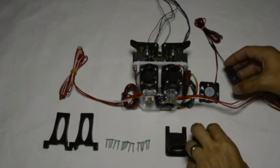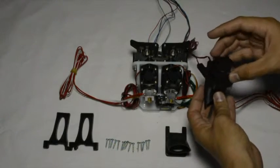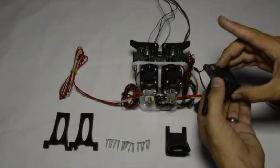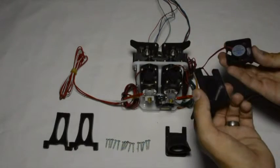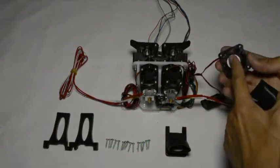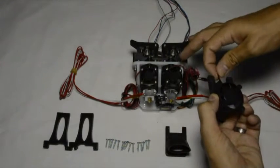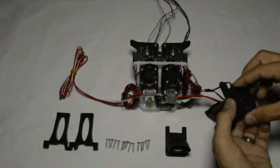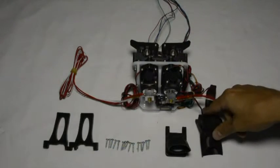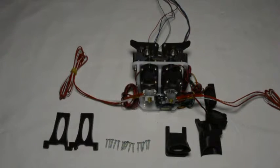So firstly we will screw the fans onto the fan ducts. And we will assemble it so that the sticker of the fan is on the inside. And the wire is going to the top. And then we'll use four screws for each fan to screw it onto the fan duct.